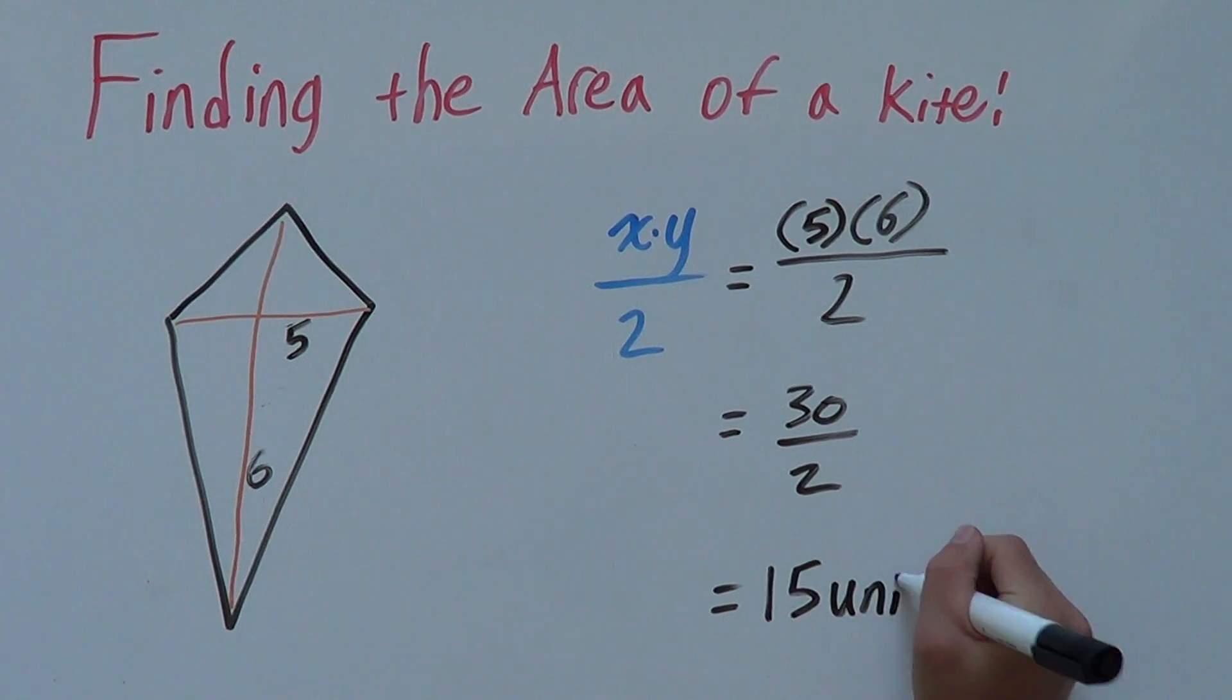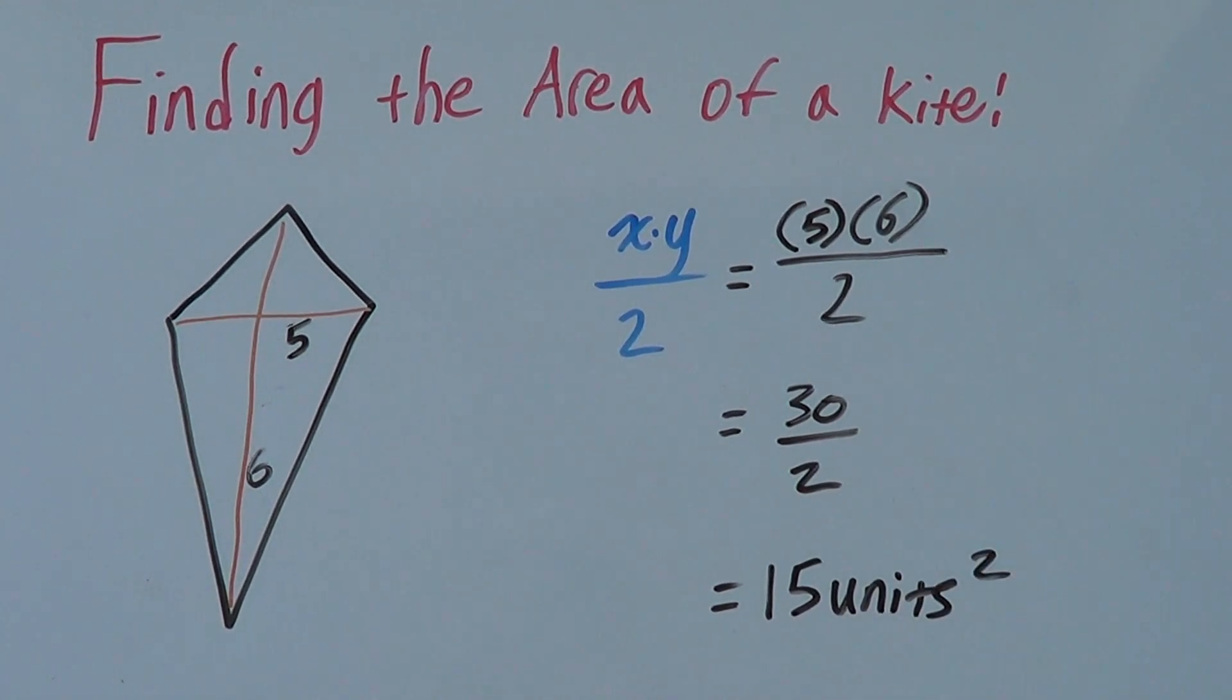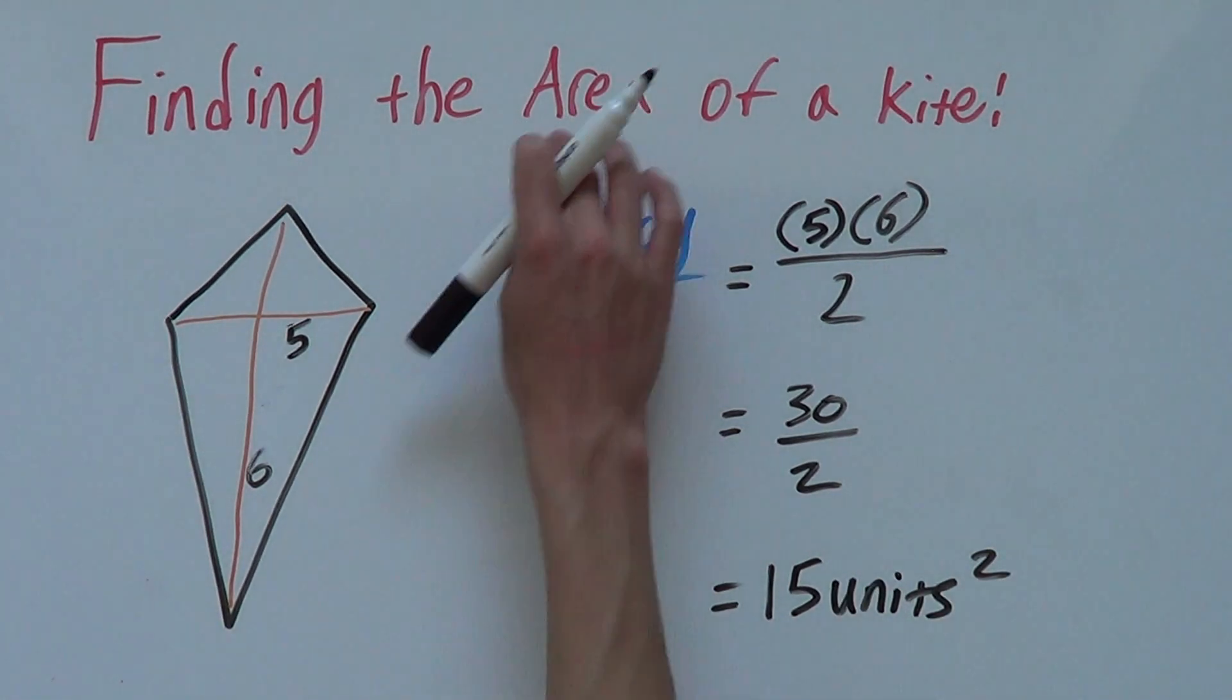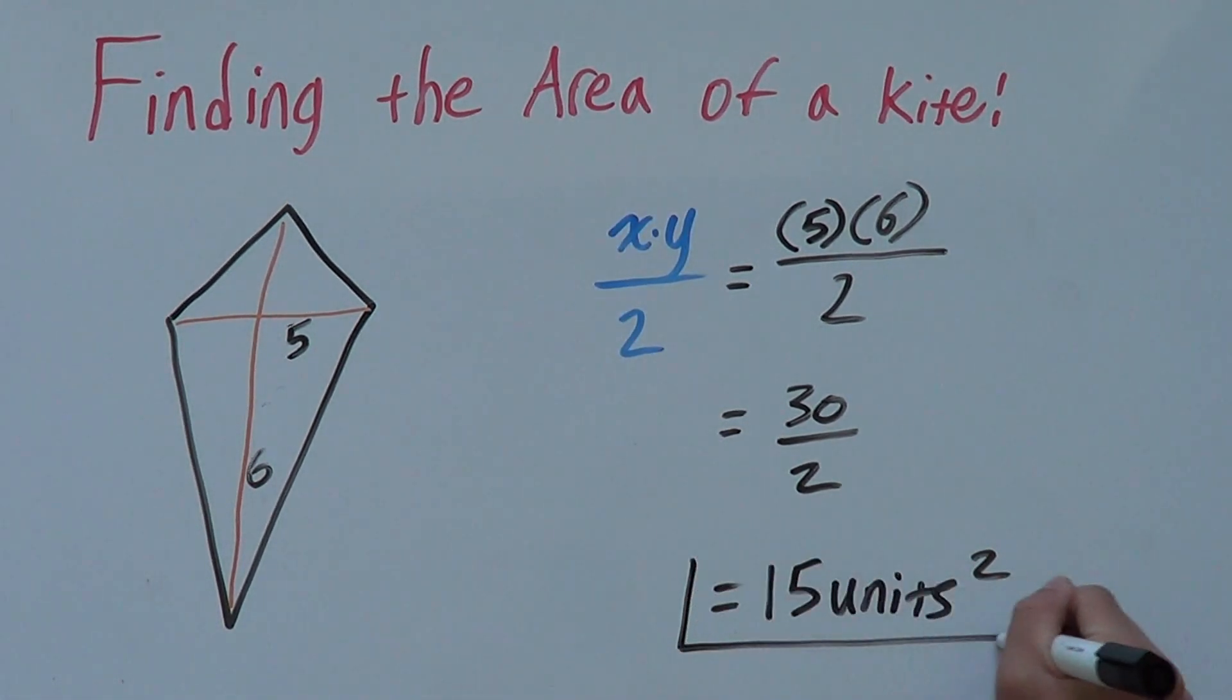So, our answer is 15 units. Whatever units you're in—centimeters, feet, meters, whatever—squared because it's area. So, our answer would be 15 units squared.